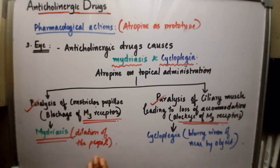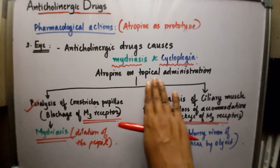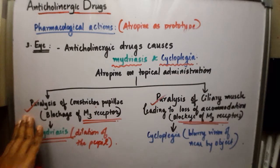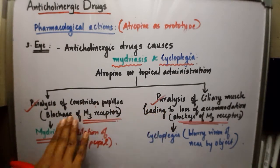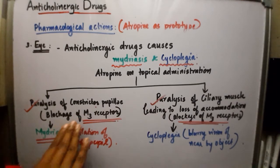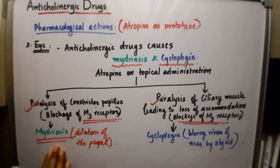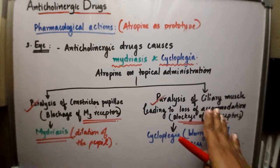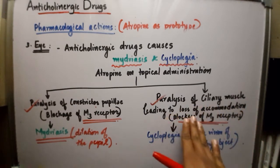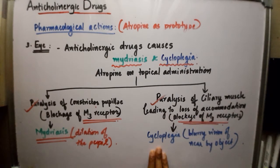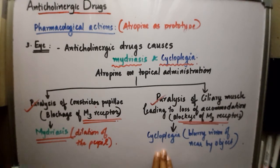When atropine or an anticholinergic drug is topically administered to the eye, it causes paralysis of the constrictor pupillae and paralysis of the ciliary muscle, both due to blockage of M3 receptors. Paralysis of the constrictor pupillae gives rise to mydriasis — dilation of the pupil. Paralysis of the ciliary muscle leads to loss of accommodation and cycloplegia, where the patient has blurry vision of nearby objects.